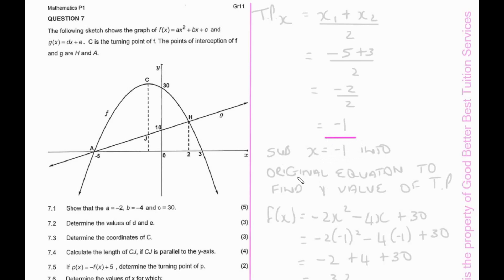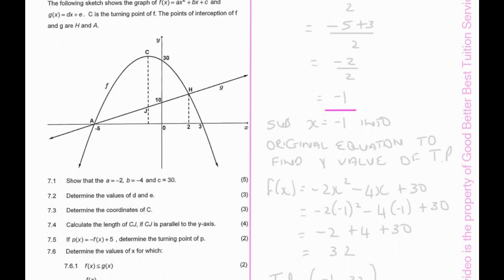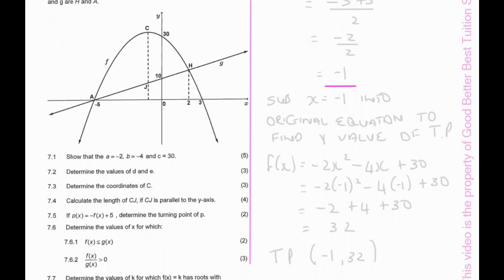We substitute x = −1 into the original equation to find the y-value of the turning point, and we get y = 32, giving us a turning point of (−1, 32).